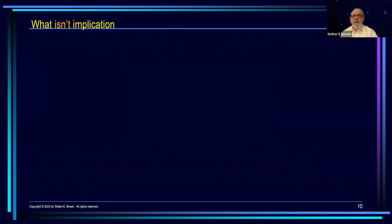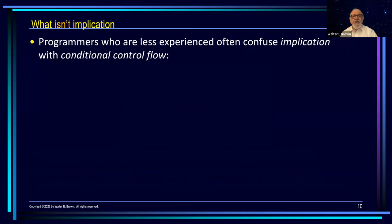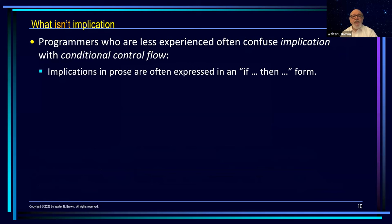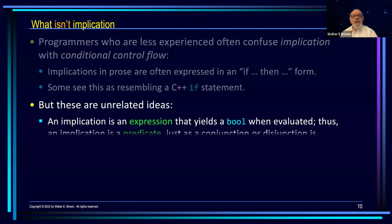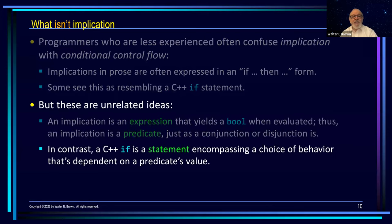Because implication has the same semantics as (not P) or Q, we can evaluate implication in the same short-circuiting way that we evaluate or. When people hear the words 'if then,' programmers who are not yet very experienced often confuse implication with what we typically refer to as conditional flow of control. That's because in prose, implications are expressed as 'if then,' and some beginning programmers see this as resembling an if statement. But those are unrelated ideas. An implication is an expression — it gives us a bool — and is a predicate just like conjunction or disjunction. In contrast, the if statement is a statement which encompasses a choice of behavior depending on the value of the predicate.